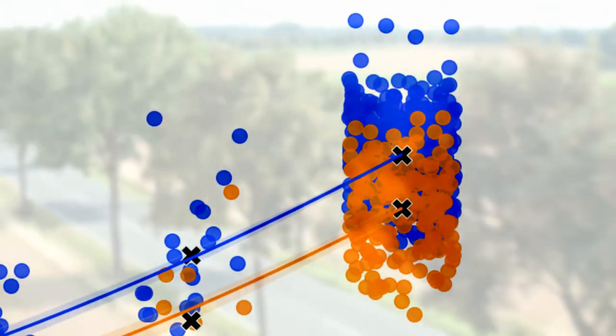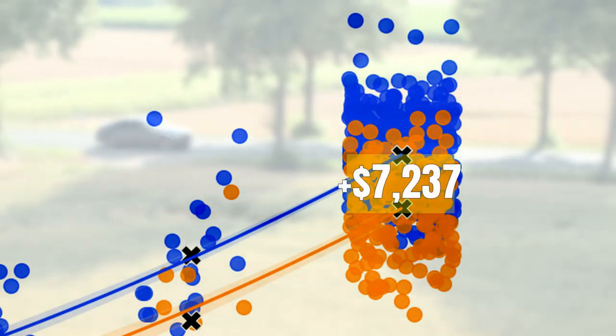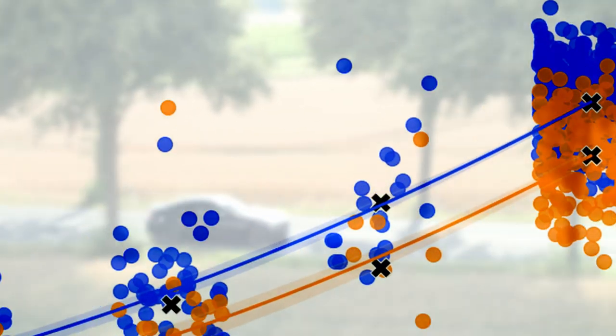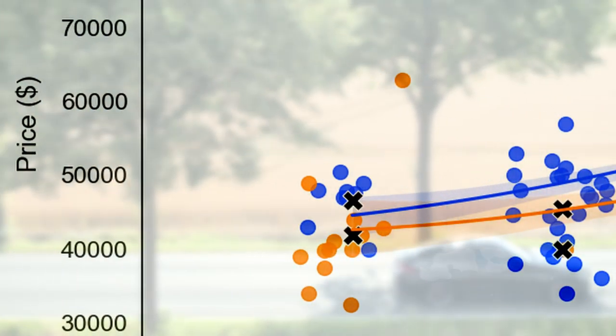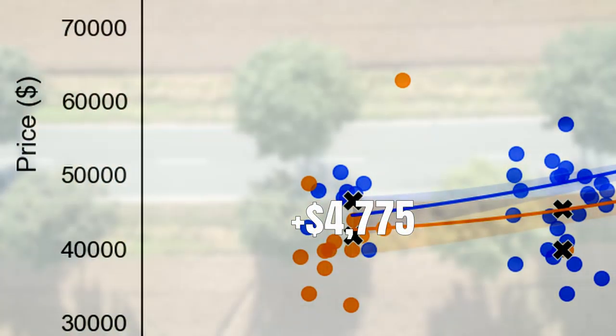When you buy a new car, you need to bring an additional $7,237 to take the S home. After 5 years though, this premium decreased to $4,775.